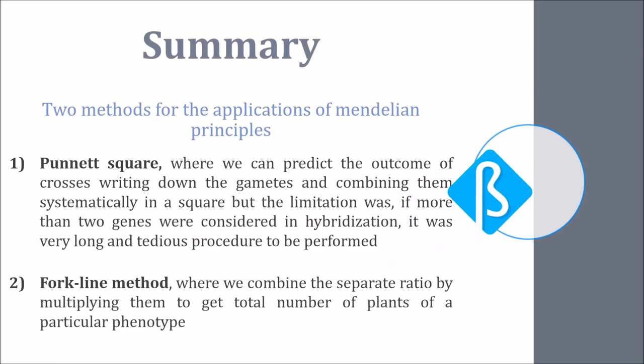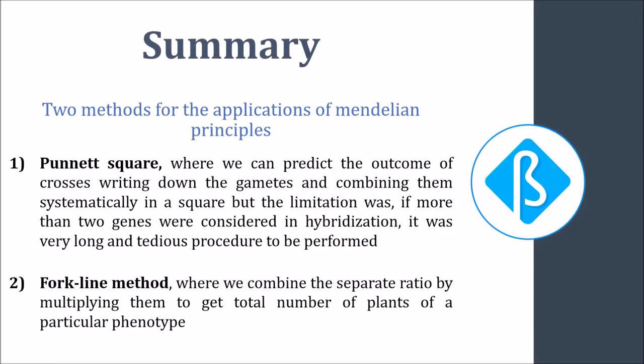In this video lecture we learned about two methods for the applications of Mendelian principles: Punnett square, where we can predict the outcome of crosses writing down the gametes and combining them systematically in a square, but the limitation was if more than two genes were considered in hybridization it was very long and tedious. That limitation was overcome by the second application, the fork-line method, where we combine the separate ratios by multiplying them to get total number of plants of a particular phenotype.